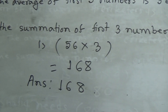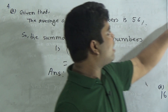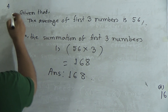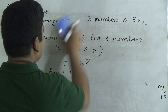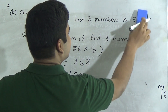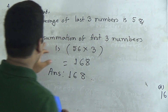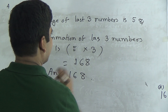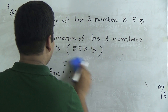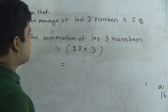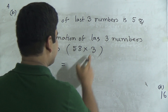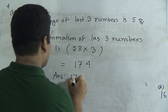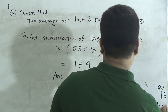Next, determine the summation of the last three numbers. Notice the average of the last three numbers is 58. Just like question A, write: given that the average of the last three numbers is 58. So the summation of the last three numbers is 58 multiplied by 3. Three eights are 24, carry 2; three fives are 15, plus 2 is 17. The result is 174. That is the answer. Question B is also done: 174.